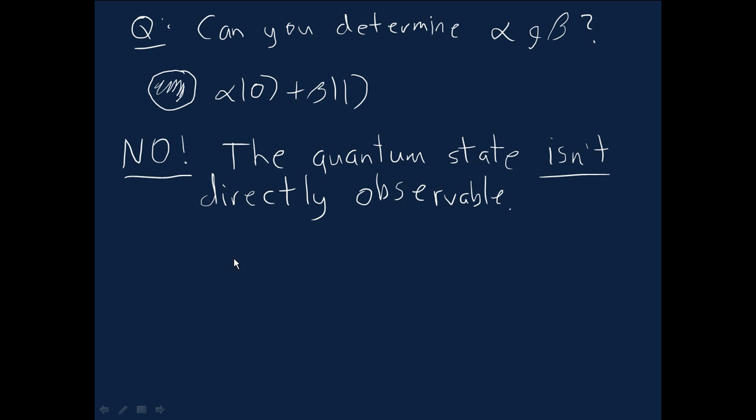It turns out that the absolute best we can do is to get partial information about alpha and beta. And I'll tell you a little bit about how we can do that very shortly. So there's a fundamental question to ask, which is what information about alpha and beta can we extract?